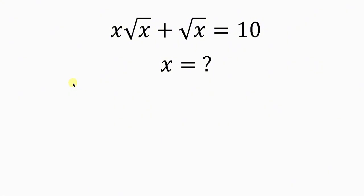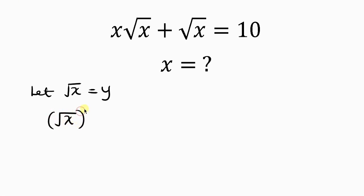We're going to be using substitution to solve this question. We can say: let the square root of x be equal to y. So wherever I see the square root of x, I'm going to substitute y. To remove the square root, I'll square both sides, giving x equal to y squared. So wherever I see x, I'll put y squared.